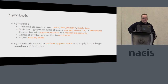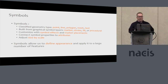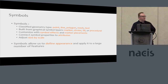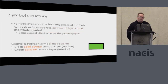There's some advanced functionality. You can connect symbol properties to attributes, do some data-driven applications, and adjust size by scale. The main key thing here is that symbols allow us to define an appearance and then apply it to a large number of features, which is really key for GIS workflows where you have large volumes of data. Symbol layers are the building blocks of symbols, and symbol effects operate on symbol layers or at the whole symbol level.